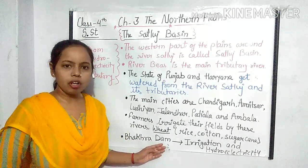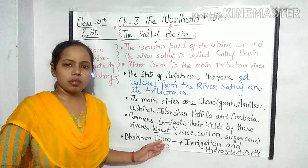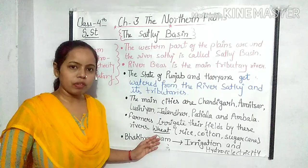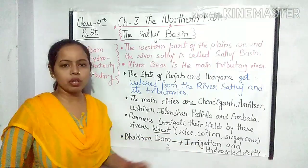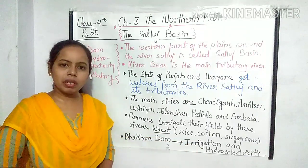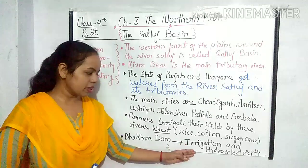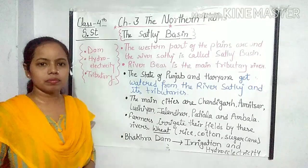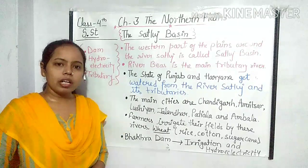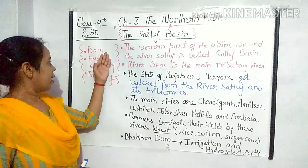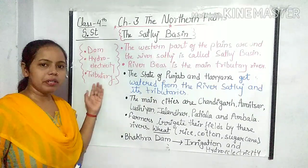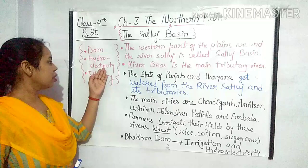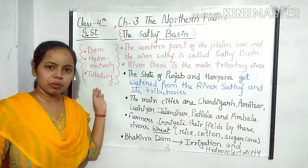Bhakra Dam has been built on River Satluj. It provides water for irrigation and hydroelectricity. Jo Bhakra Dam hai, woh hydroelectricity tatha irrigation ke liye paani uplabdh karata hai.